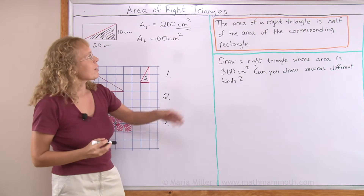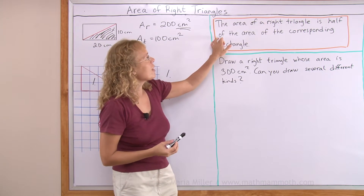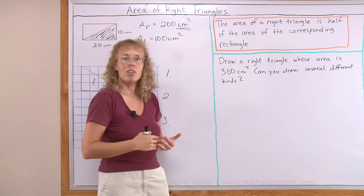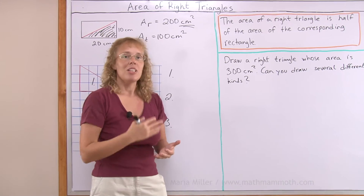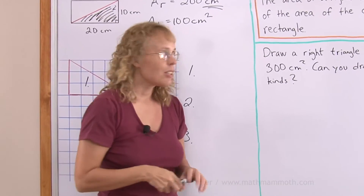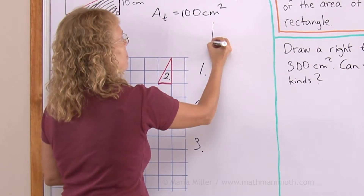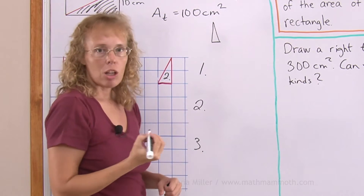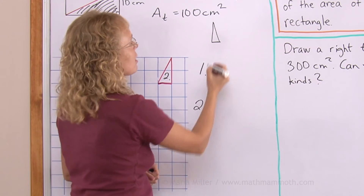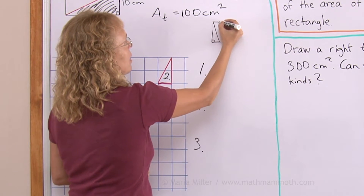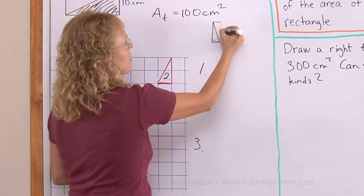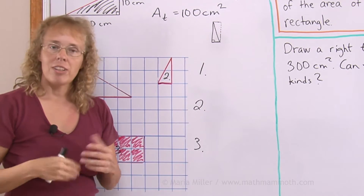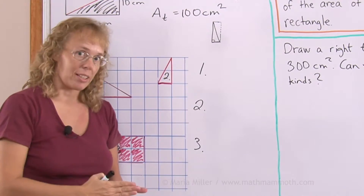The area of a right triangle is half of the area of the corresponding rectangle. When you have a right triangle, there is always a rectangle associated with it. You just find the area of the rectangle and take half of that.